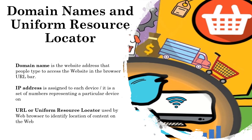The domain name system is operated by the Internet Corporation for Assigned Names and Numbers, also known as ICANN — a non-profit company that establishes and implements domain name policy. A domain name is a website address that people type to access a website in the browser URL bar. The internet is a vast network of computers linked by a global cable network, where every machine can communicate with others. An IP address — a set of numbers representing a particular device — is assigned to each device on the internet.